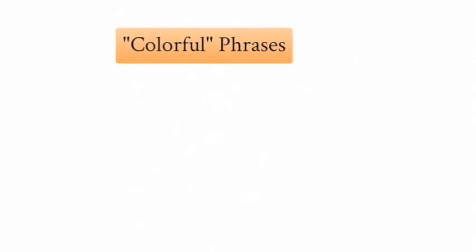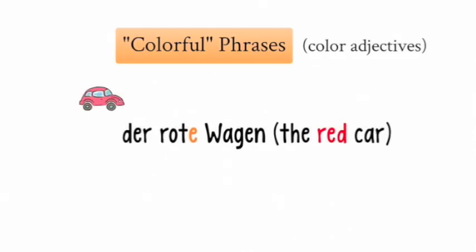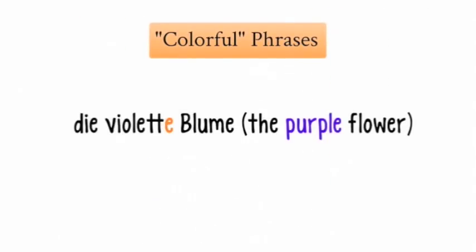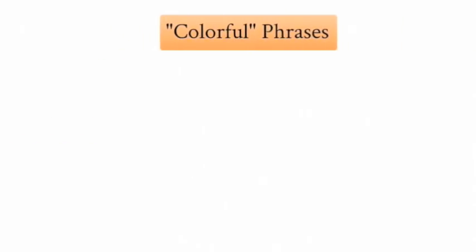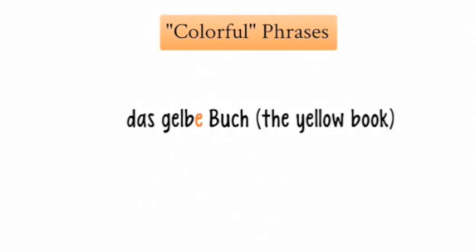Now let's continue with color adjectives. Here we have the example of Der rote Wagen, 'the red car.' In the case of the definite article Der, the adjective rot changes to rote. The second example is Die violette Blume, 'the purple flower,' where violett changes to violette. The next sentence is Das gelbe Buch, 'the yellow book,' where gelb changes to gelbe.